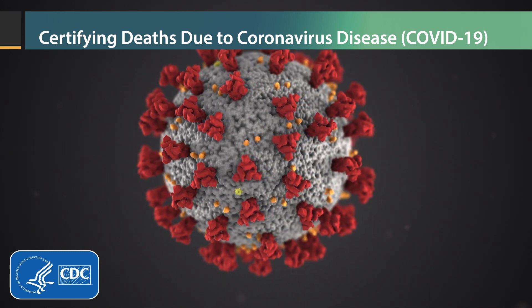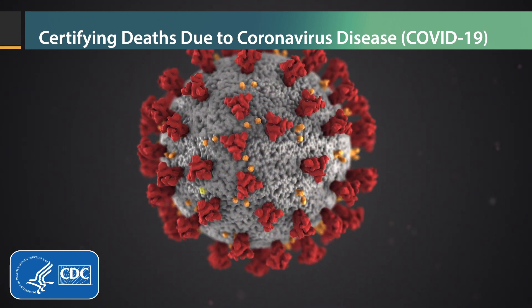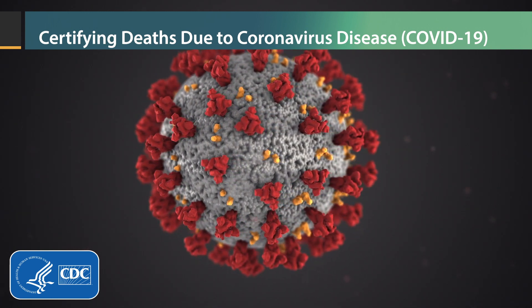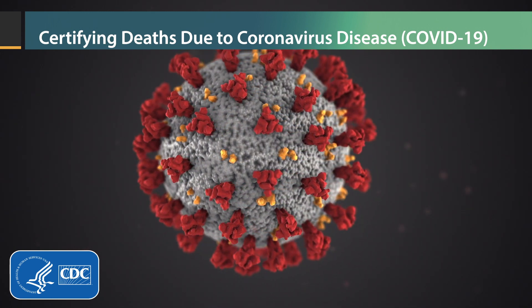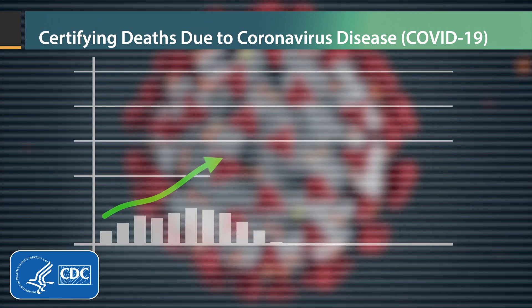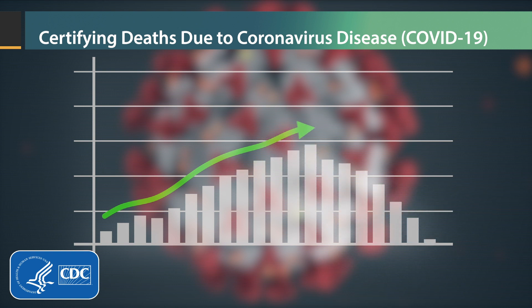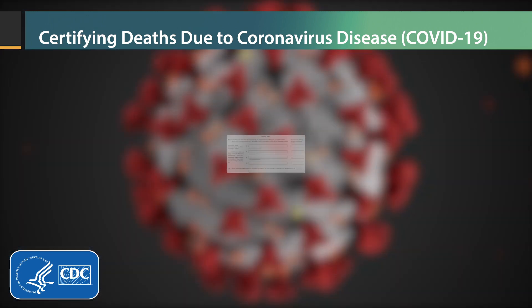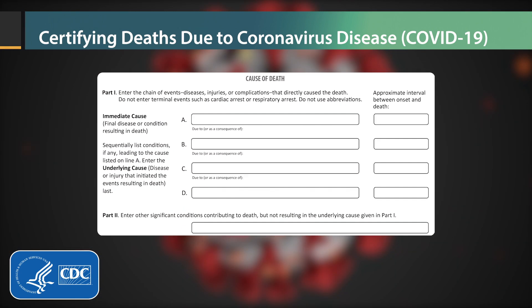In a public health emergency such as COVID-19, death certificate information is critical in measuring the pandemic's effects on the population and directing the appropriate public health response. Death certificates provide crucial data on causes of death and are used to document deaths resulting from this pandemic. This can only be done with complete and accurate cause of death reporting. When COVID-19 is determined to be the cause of death, it is important that it be reported on the death certificate. Otherwise, proper tracking of the pandemic is not possible.